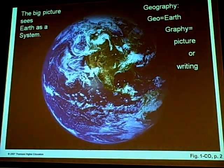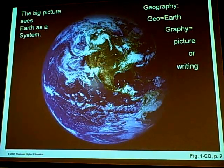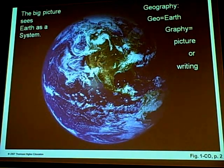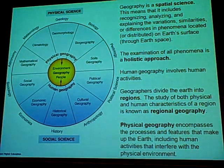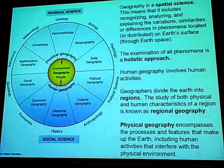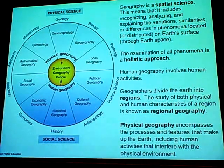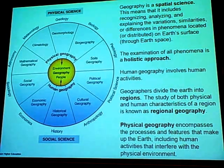So, what is geography? Well, the field of geography sees Earth as a system. It looks at the big picture — it looks at flows and how things are connected to one another. It's a spatial science and a holistic science. Spatial, of course, relates to space — things happen in different areas. The holistic approach means looking at how the whole thing fits together.